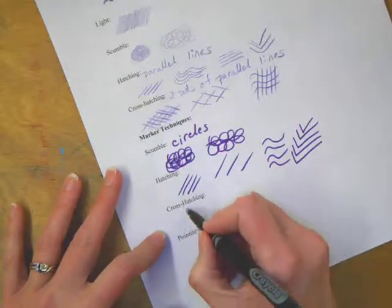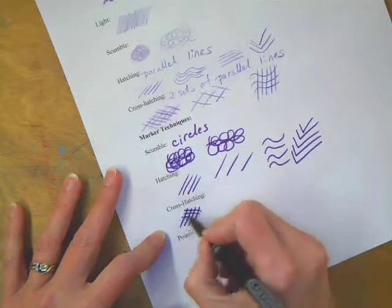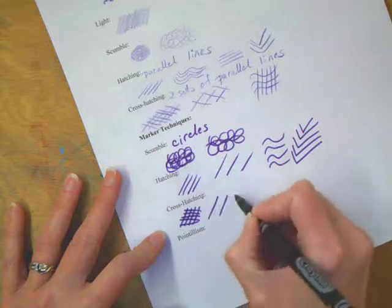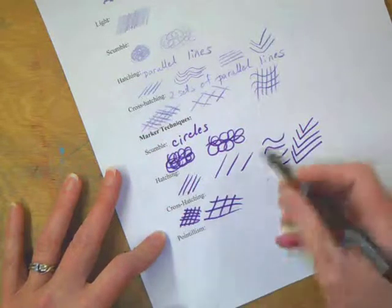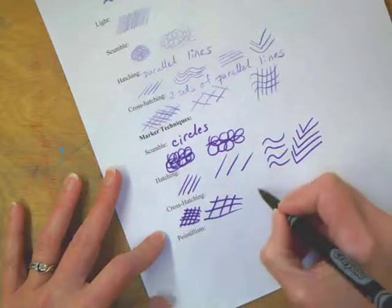Cross hatching, just like in pencil, two sets of parallel lines. The fewer the lines you make, the lighter it gets.